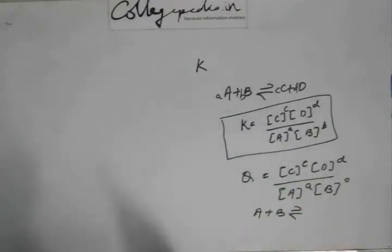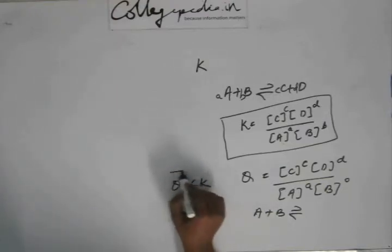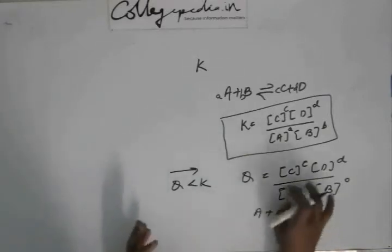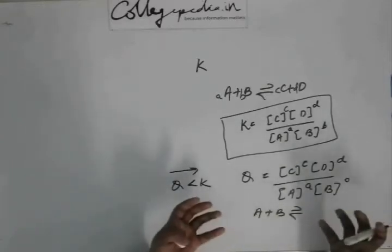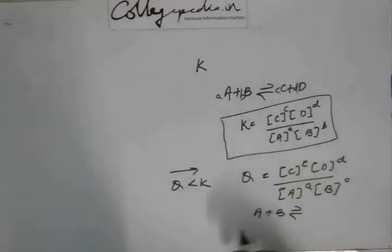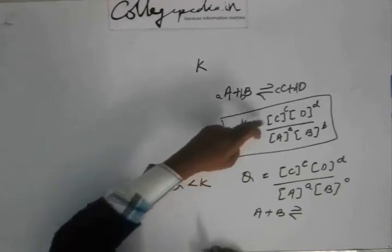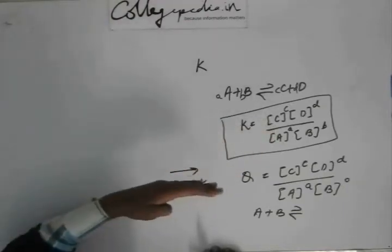If Q is less than K, then the reaction shifts towards K — meaning towards the forward direction. If Q is less, that means C and D are very low, and C and D will be formed more. Then the reaction will move towards equilibrium and stop, because the reaction stops at equilibrium. If C and D are less, that means they are yet to be increased, so the reaction will move forward.